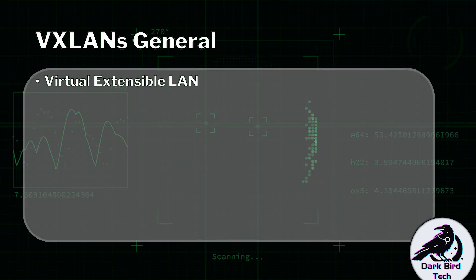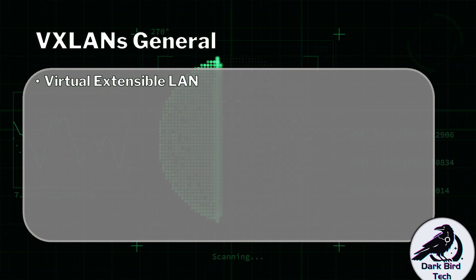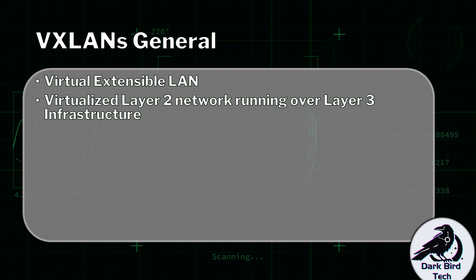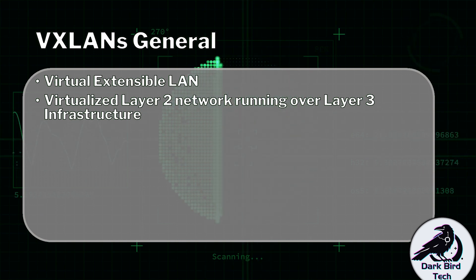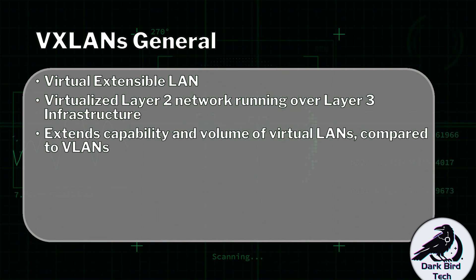VXLANs in general, or virtual extensible local area networks — we love our acronyms. What it does is it allows us to run a virtualized layer two network over a layer three infrastructure. So yes, this is going to allow us to run VLANs over routed infrastructure. And this actually extends the capability and volume of our virtual LANs as well.